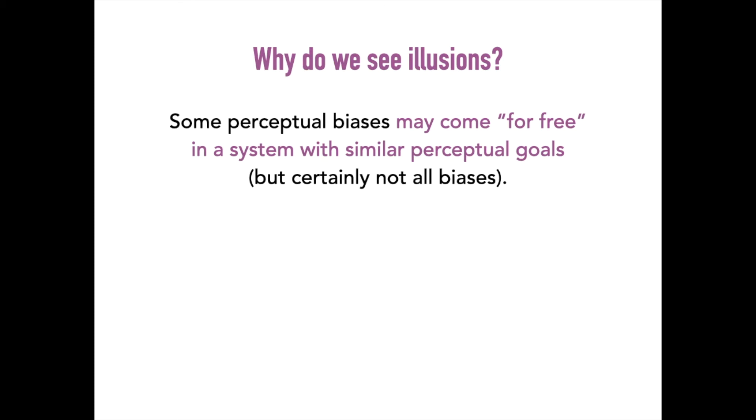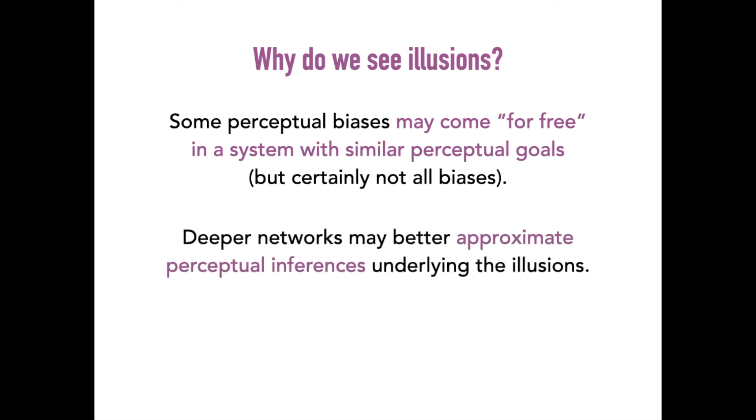This idea of signals that come for free when you learn one particular type of perceptual goal is an idea that my lab is really interested in at this point, and there's several new topics that we're exploring about these types of hidden signals. Another finding that I didn't have time to talk about here was that deeper networks may better approximate perceptual inferences underlying these illusions. Going forward, my lab is also doing a lot of comparative work between different networks to see what type of architecture better matches human visual experience, in particular these types of failures of awareness.